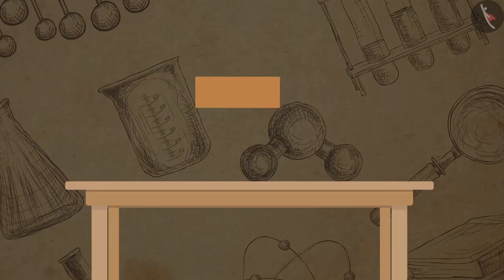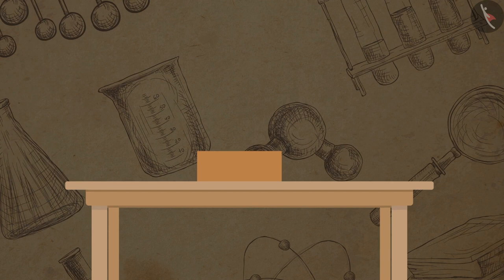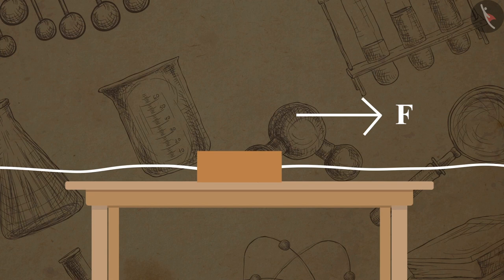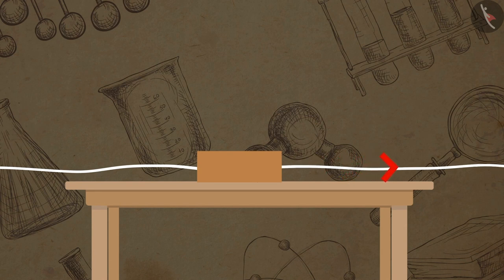Take a wooden block and place it on a table. Let a constant force F be applied on the wooden block. Let the wooden block displace through a distance s in the direction of force.